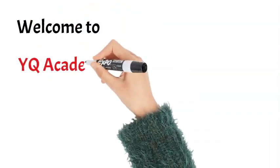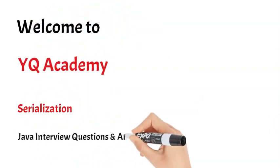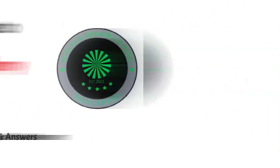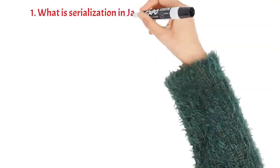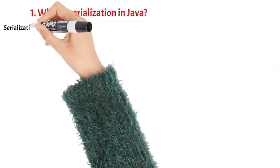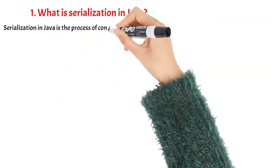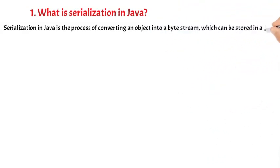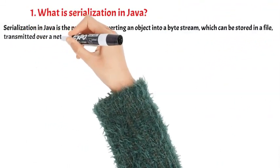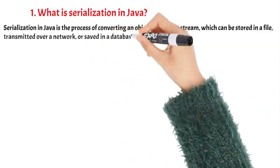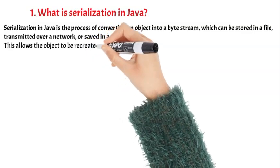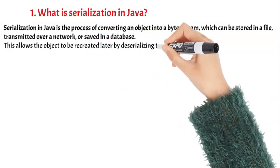Welcome to YQ Academy Serialization Java Interview Questions and Answers. What is Serialization in Java? Serialization in Java is the process of converting an object into a byte stream, which can be stored in a file, transmitted over a network, or saved in a database. This allows the object to be recreated later by deserializing the byte stream.